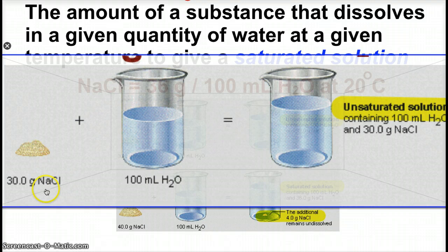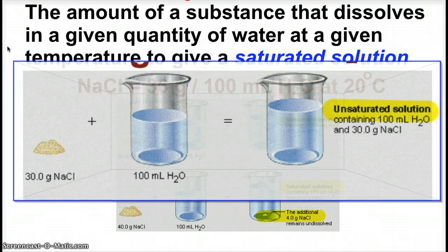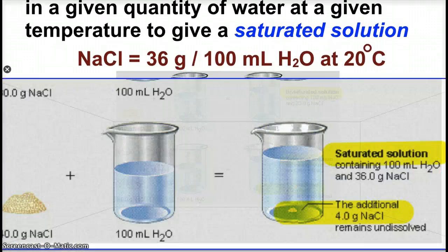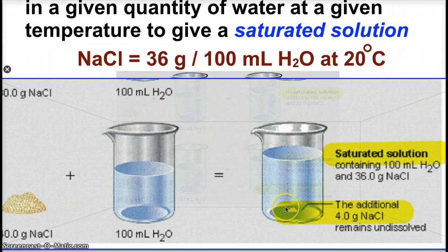When I put 30 grams of sodium chloride into 100 milliliters of water, it completely dissolves and we say that solution is unsaturated, because I have the ability to dissolve more. When I put 40 grams into 100 milliliters of water, 36 grams will dissolve and 4 grams will remain undissolved at the bottom — the solution is saturated. This is where we see the dynamic equilibrium: some solid dissolves, some ions precipitate back, but overall 36 grams stays dissolved.